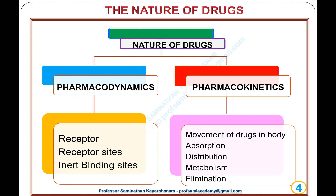The nature of drugs — pharmacodynamics and pharmacokinetics. Pharmacodynamics concerns drug interaction at receptor sites and inert binding sites of the cell. Pharmacokinetics concerns the movement of drugs in the body: drug absorption, drug distribution, drug metabolism, and drug elimination.